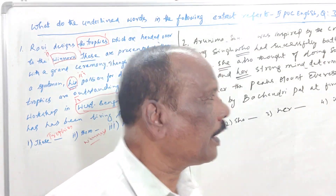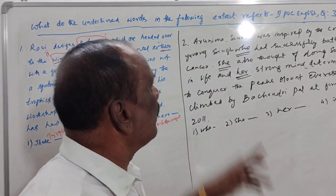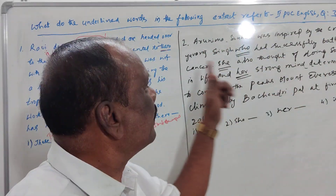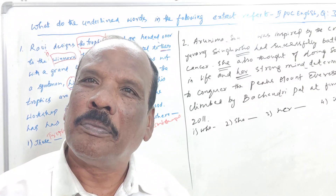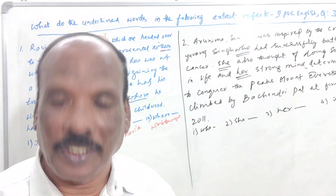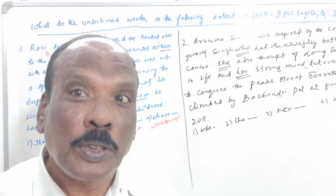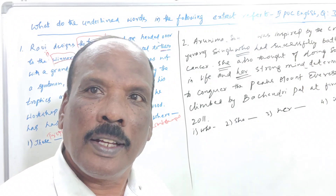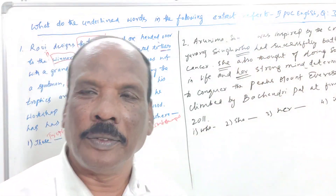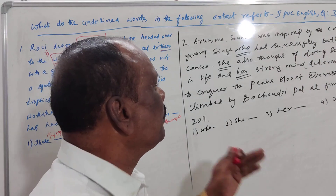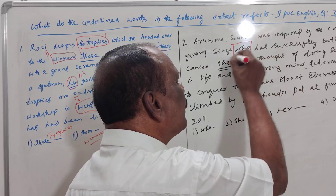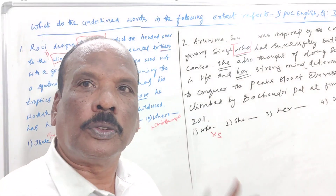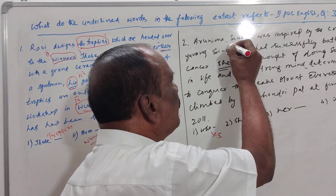Now coming to another extract. Arunima Sinha was inspired by the cricketer Yuvraj Singh. He was a cricketer. So who inspired Arunima Sinha? It is Yuvraj Singh. 'Who' refers to Yuvraj Singh — that is the answer for the first question.